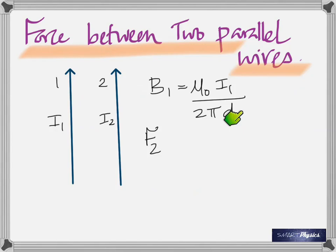What will be the direction of that force? Hold the right hand with fingers in the direction of the current — upward — then bend them in the direction of the magnetic field — into the plane of the board. The force acts towards the other conductor. Similarly, conductor two's current produces a magnetic field at conductor one that is out of the plane of the board, and the resulting force on conductor one is also towards conductor two.